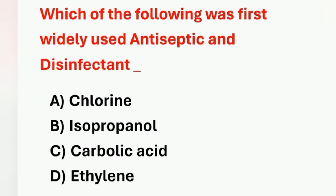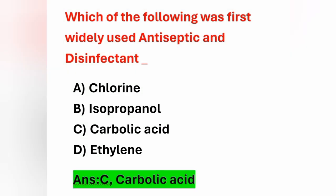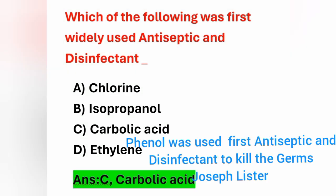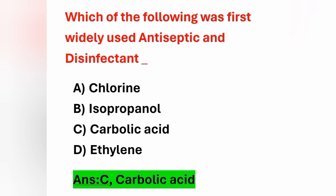Next question: Which of the following was first widely used antiseptic and disinfectant? Options: A) Chloride, B) Isopropanol, C) Carbolic acid, D) Ethylene. Among the following, which one was first widely used antiseptic and disinfectant? It is carbolic acid — Option C is the correct answer. Carbolic acid is also known as phenol, which was used as the first antiseptic and disinfectant to kill germs. It was introduced by Joseph Lister.